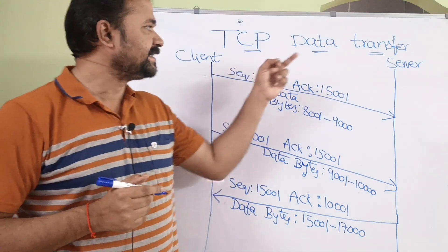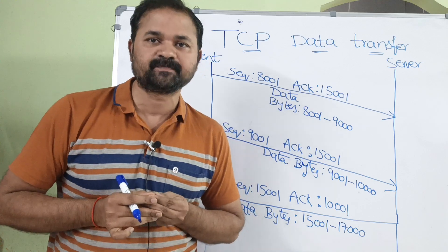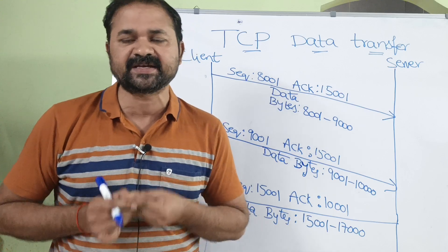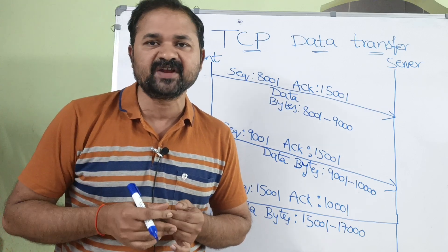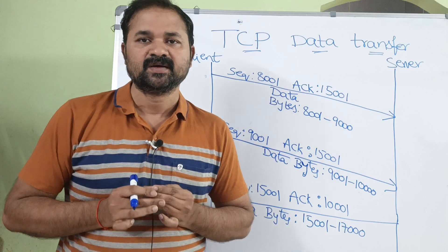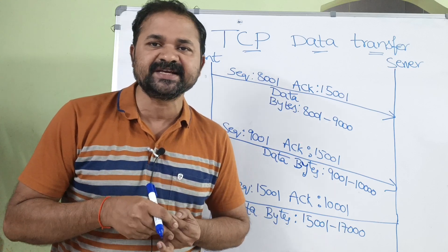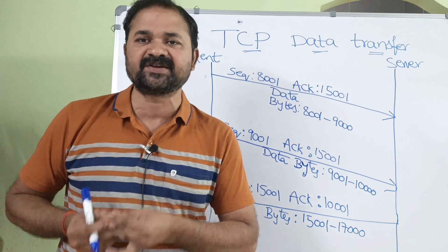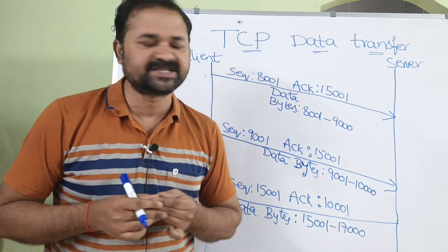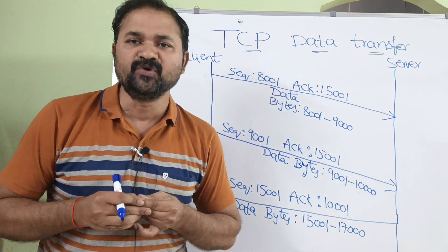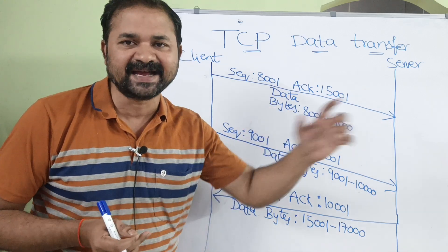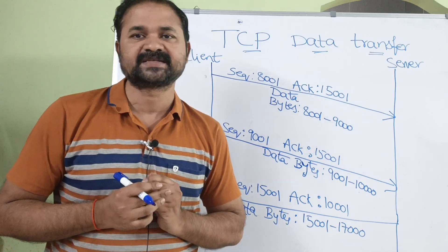Let us discuss TCP data transfer. In the last video, we have seen TCP connection establishment. We know that the connection is established with the help of a three-way handshake procedure. Once the connection is established between the client and the server, both can transfer data. TCP uses full duplex communication, which means both client and server can send data simultaneously.